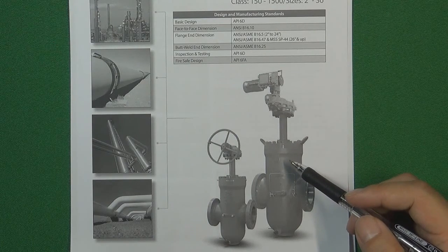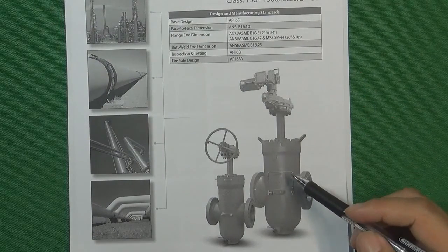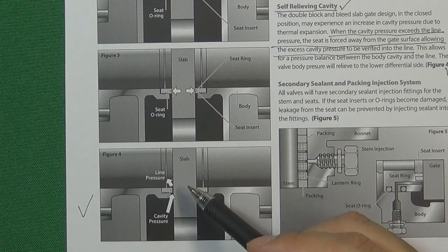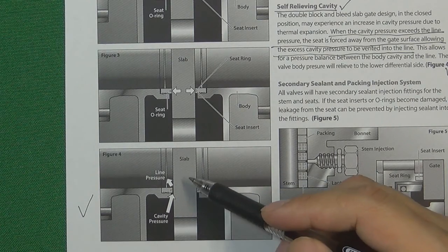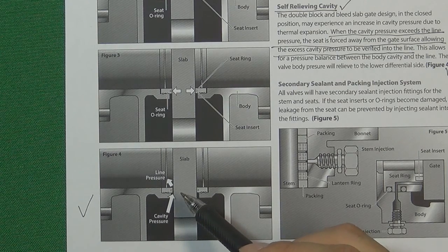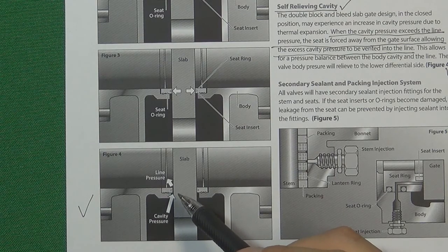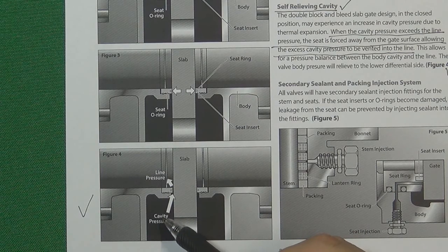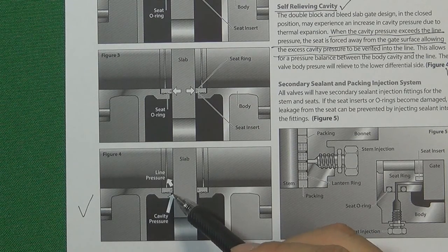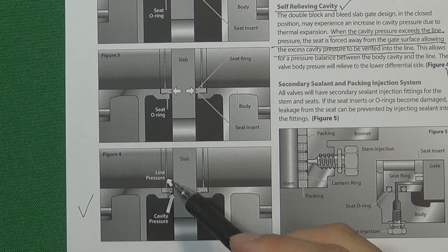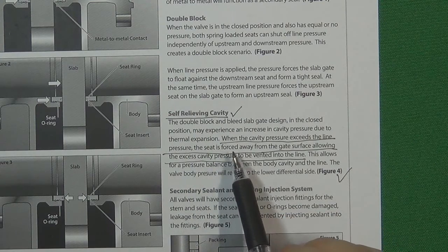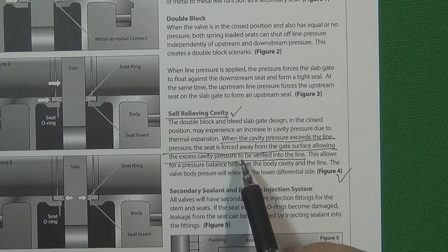Here is a slab gate valve cutaway from an API 6D valve manufacturer. In API 6D, all gate valves have flexible seats. The picture shows the basic principle of cavity pressure relief. Here is the slab — the gate valve gate — and beside it is the valve seat ring located in the valve body. Here is the cavity. When the cavity contains excess pressure, the pressure pushes the valve seat back, leaving a gap between the slab and valve seat so the pressure can relieve into the line.